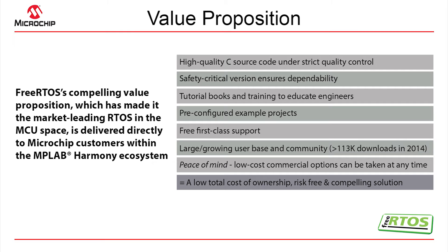Our aim is to remove any possible reason why someone might not want to use a free product in a commercial application, which is why the distribution model is the way it is. There's no risk of accidental IP infringement, which is a very common reason people have for not using free software. But there are always cases where a company mandates that somebody is accountable for all the software in their embedded system — we have covered that angle too. If you need indemnification or ticketed private support, you have the option of buying an OpenRTOS license.